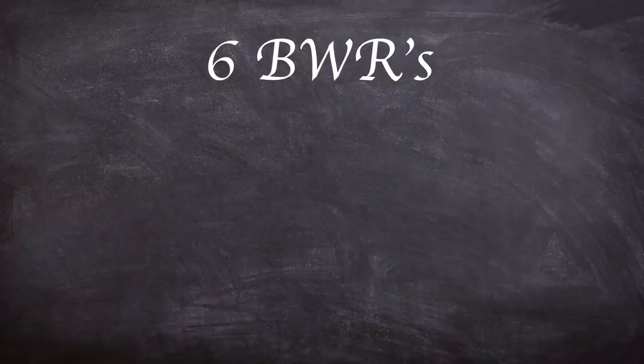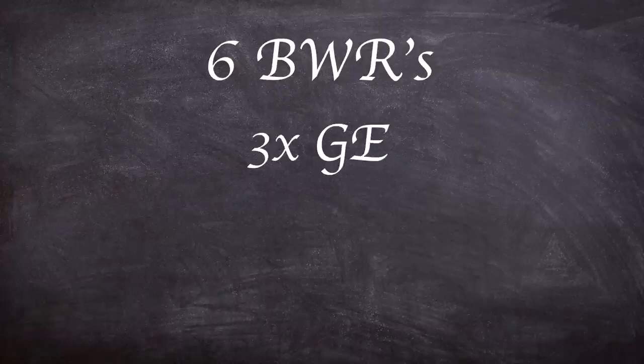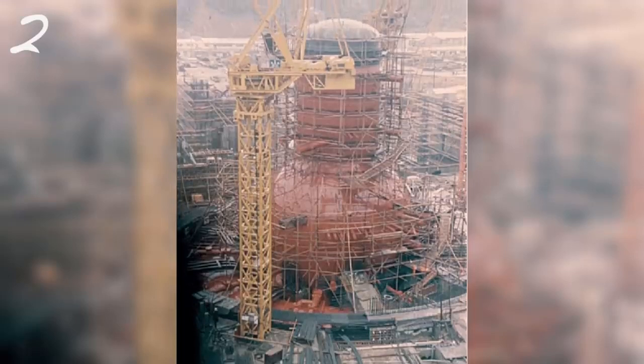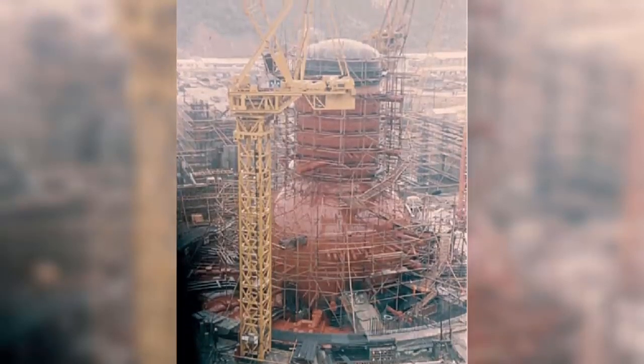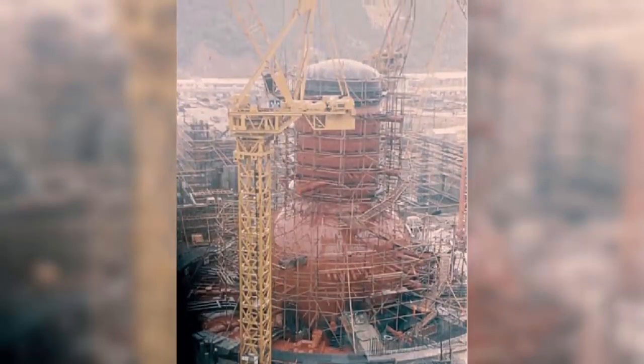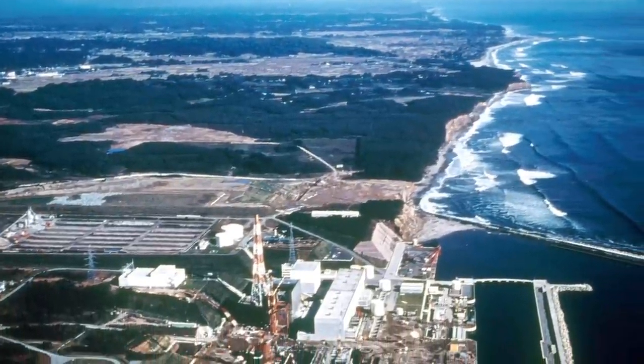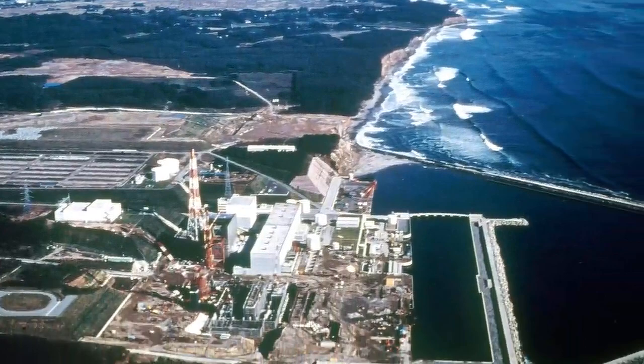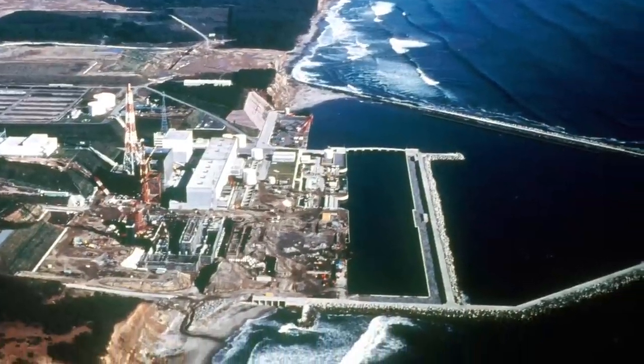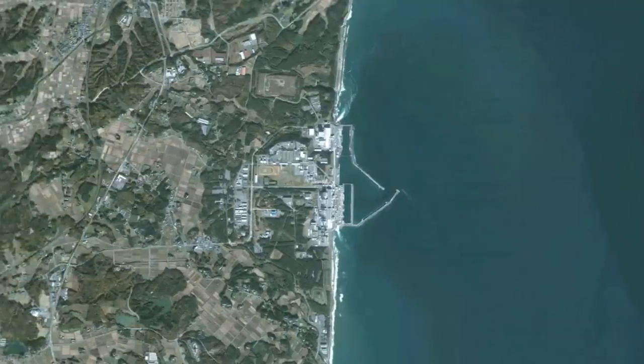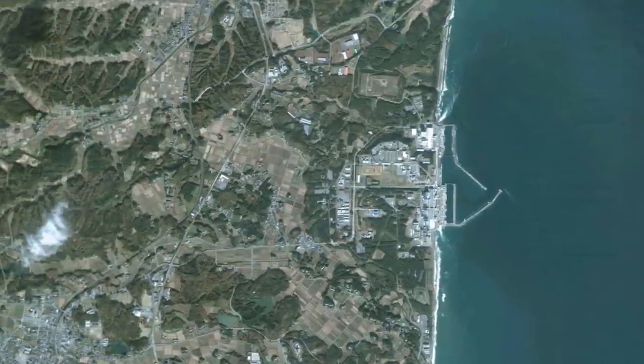The site houses six boiling water reactors, three built by General Electric, two by Toshiba and one by Hitachi although all were designed by GE. Construction on the site began in 1967 on Unit 1 with its commercial operation beginning in 1972. For the next seven years the remaining five units came online with Unit 6 commissioned in October 1979. During the 12 years between 1967 and 1979 BWR design improvements led to variations between the six units on the site.